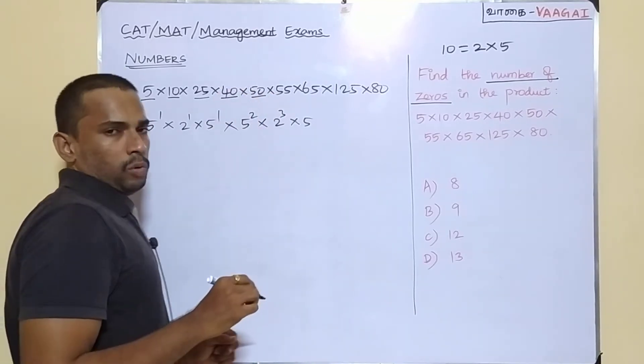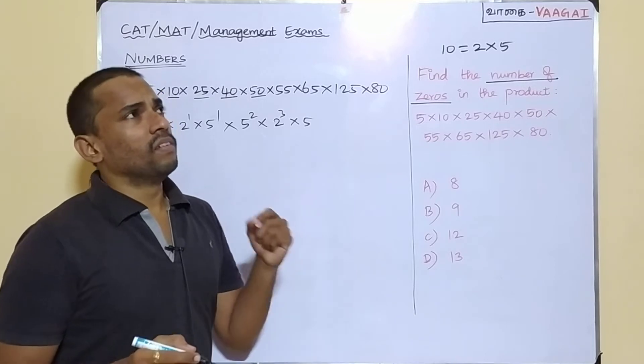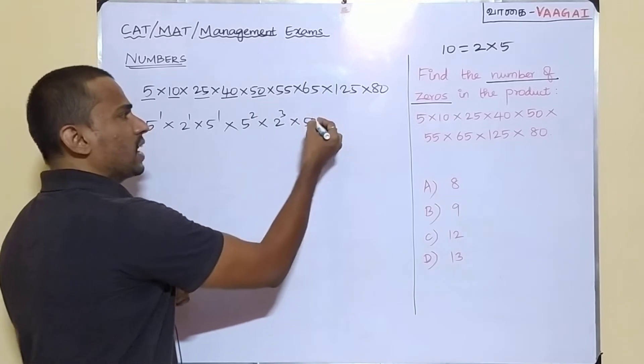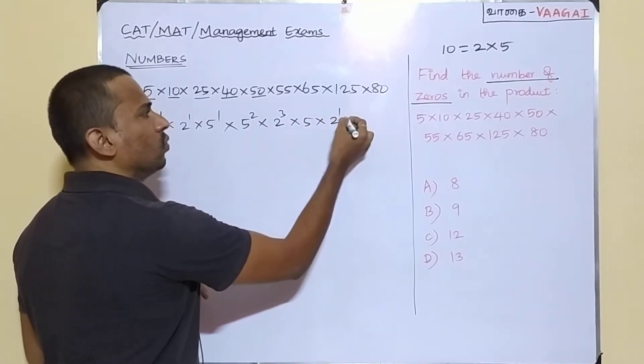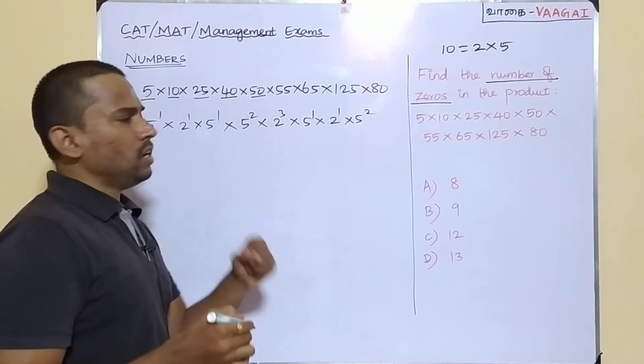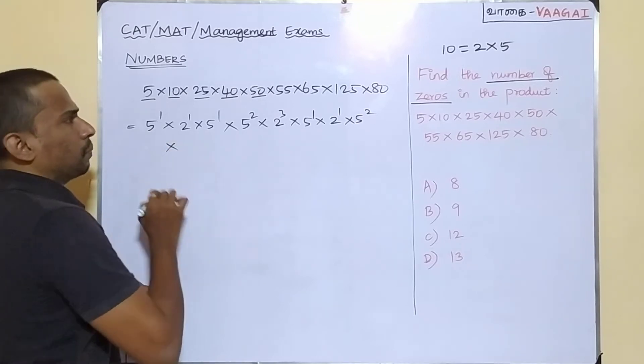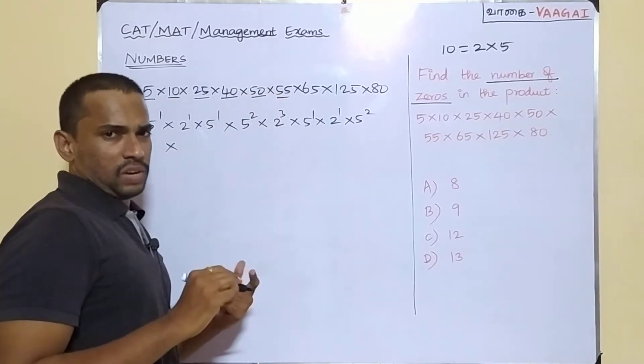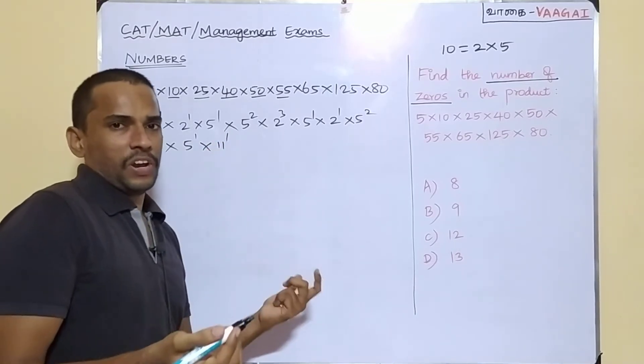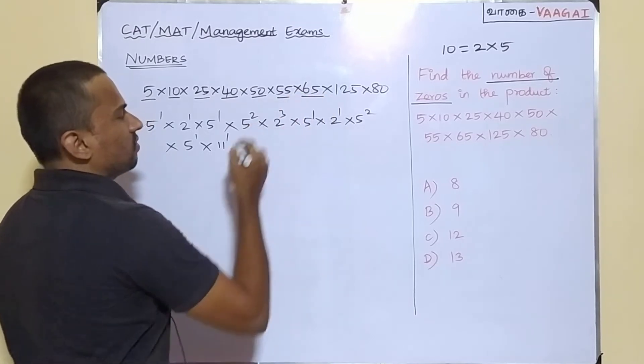Next, coming to this 50. 50 can be written as 2 power 1 into 5 power 2. I am continuing down, multiplied with this 55. Next number is 55, which can be written as 5 power 1 into 11 power 1. Anyways, 11s we don't need, but still, I am just taking it as expression.